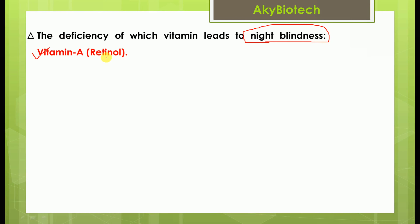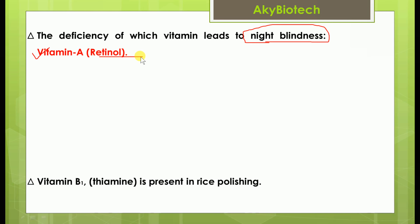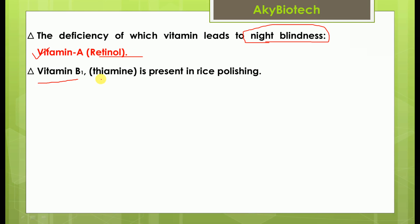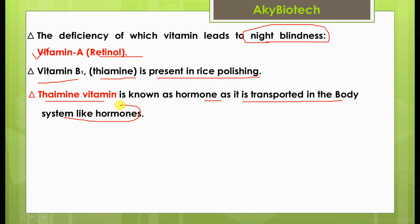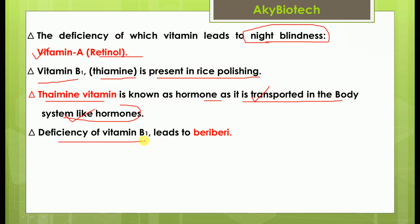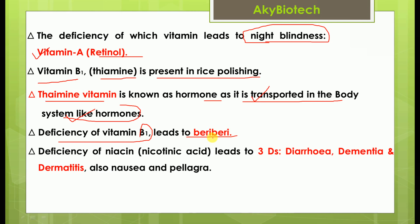Deficiency of vitamin A leads to night blindness; its other name is retinol. Vitamin B1, also called thiamine, is present in rice polishing. Thiamine vitamin is known as a hormone and is transported in the body system like hormones. Deficiency of vitamin B1 leads to a disease called beriberi.